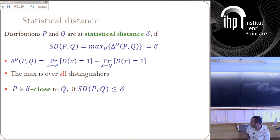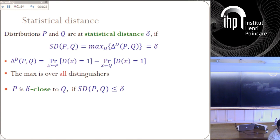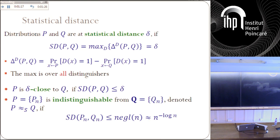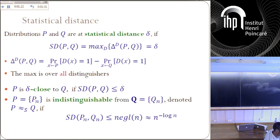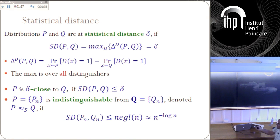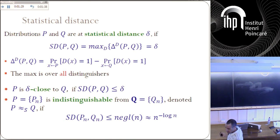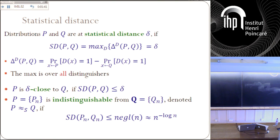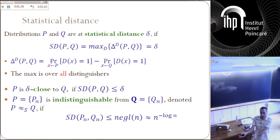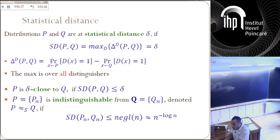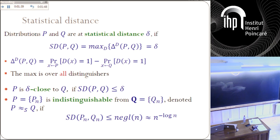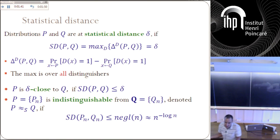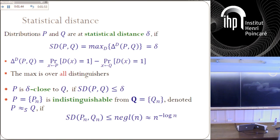I'm taking the maximum over all distinguishers. Later on, I'm going to introduce a new notion, and we're going to take the maximum only over polynomial-bounded distinguishers. I say distribution P is delta-close to Q if the statistical distance is at most delta. And I also say that a distribution ensemble is indistinguishable from a different distribution ensemble. Here the ensemble distribution: for every n I have a pair of distributions P_n and Q_n, and if the statistical distance between P_n and Q_n converges to zero — smaller than 1 over poly for any polynomial, you can think of it as smaller than n to the minus log n — then they are statistically indistinguishable.